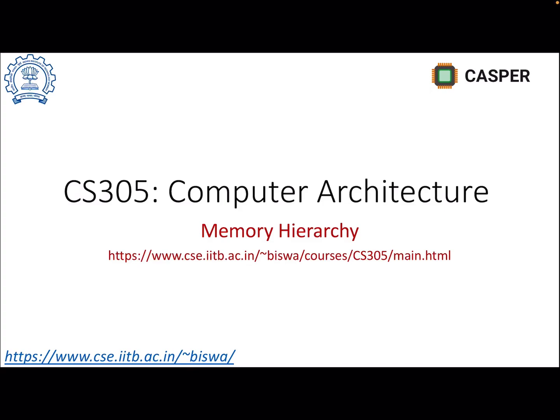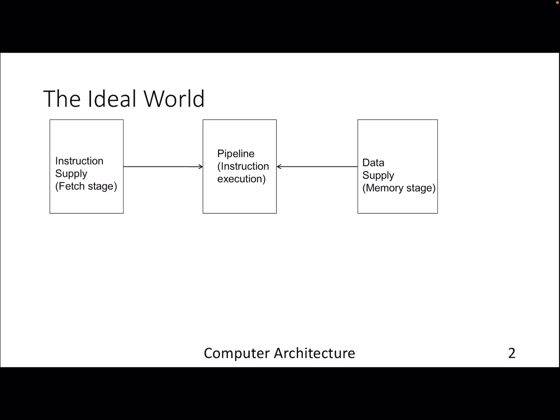Welcome to this lecture on memory hierarchy. In this lecture we'll start discussing how exactly we store our data, how a processor accesses data from various kinds of memory, and what the notion of memory hierarchy is. In our ideal five-stage pipeline, we actually need code and data at the fetch stage and at the memory stage. There is an instruction memory and a data memory, and we will be expanding this topic over the next few weeks.